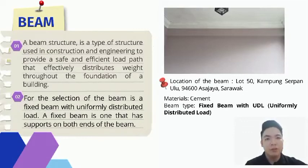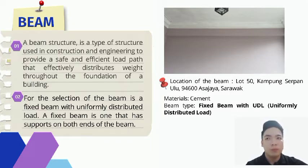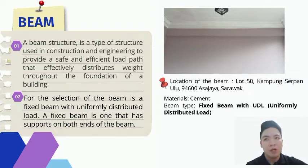Hi, my name is Nilatan and I will present the beam structure. A beam is a type of structure used in construction and engineering to provide a safe and efficient load path that efficiently distributes weight throughout the foundation of a building. For this project, the beam is a fixed beam with uniform distributed load, located at Lot 50, Kampung Sekon Ulu, 94600 Asajaya, Sarawak. The material is cement.